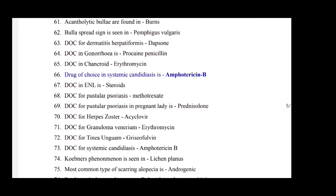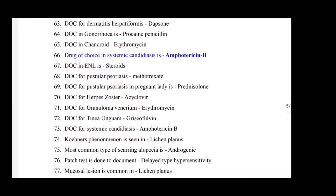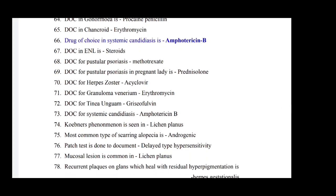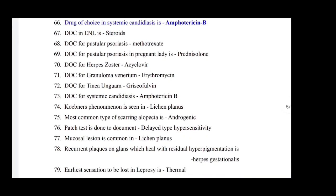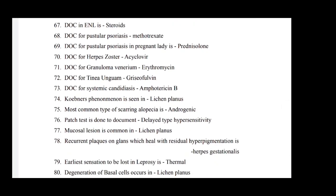Drug of choice for dermatitis herpetiformis is dapsone. Drug of choice for gonorrhea is procaine penicillin. Drug of choice for chancroid is erythromycin. Drug of choice for systemic candidiasis is amphotericin B. Drug of choice for lichen planus is steroids. Drug of choice for pustular psoriasis is methotrexate. Drug of choice for pustular psoriasis in pregnant ladies is prednisolone. Drug of choice for herpes zoster is acyclovir. Drug of choice for granuloma venereum is erythromycin.